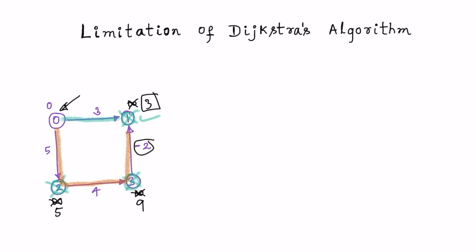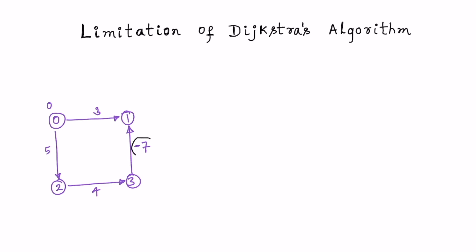Let's see what happens if we change the negative edge from minus 2 to minus 7 in the same graph. The only change made is this edge is now minus 7. We start from node 0 again, marking the distance to node 0 as 0 and distance to all other nodes as infinite.